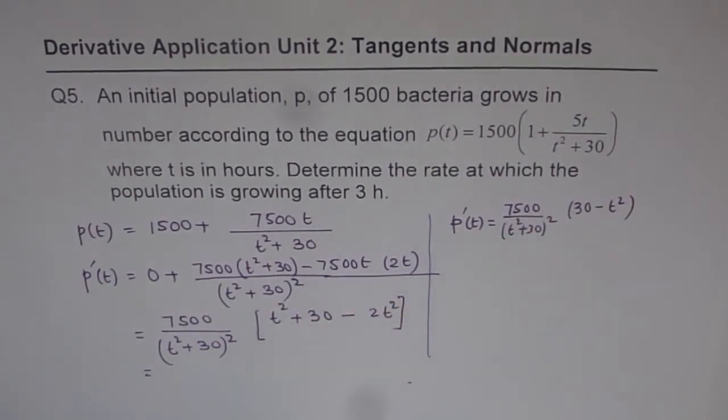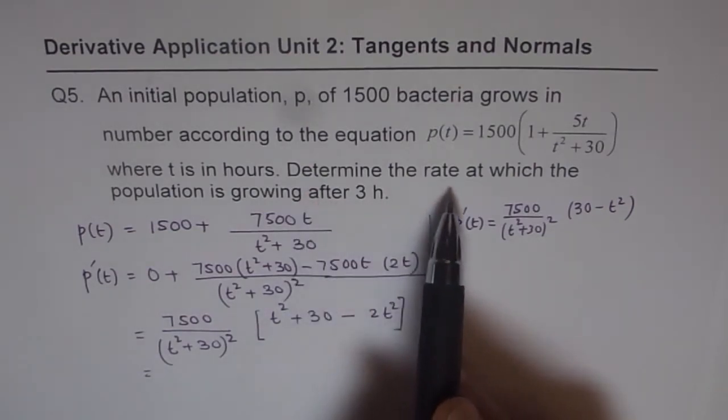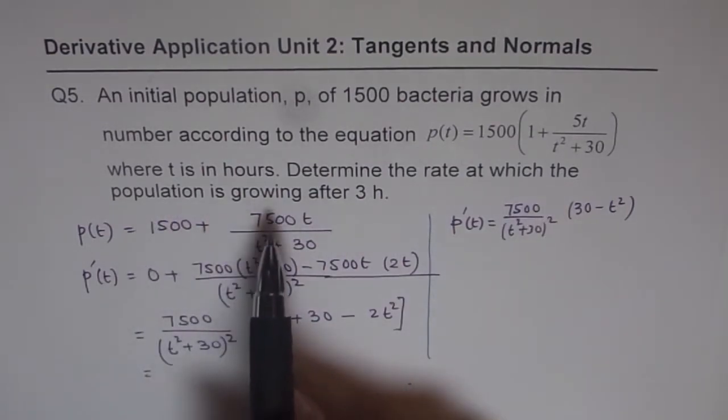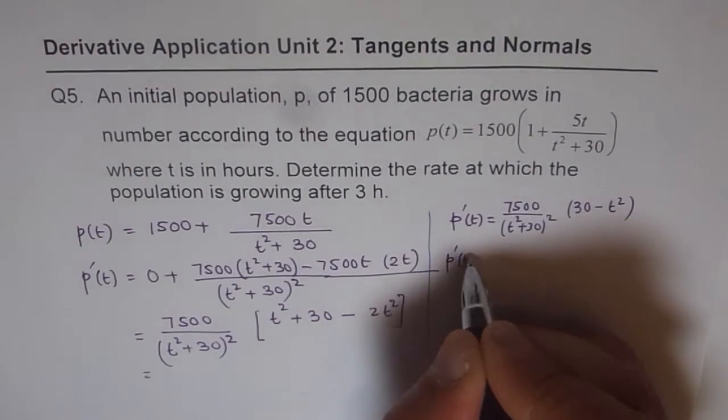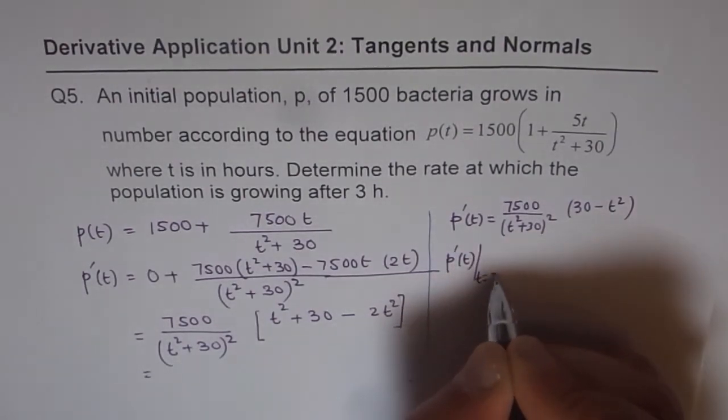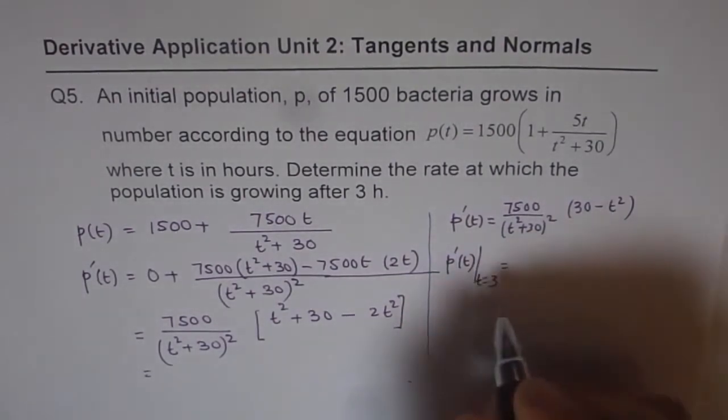T squared minus 2t will leave us with 30 minus t squared. Now we need to determine the rate at which the population is growing after 3 hours. That means P dash t when t equals to 3. That is what we need to find. So let's plug it in 3 here and calculate.